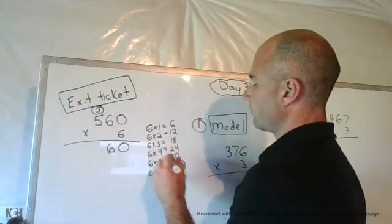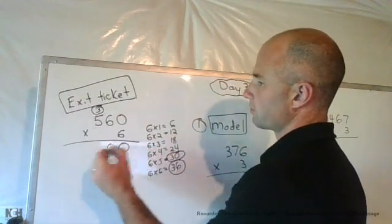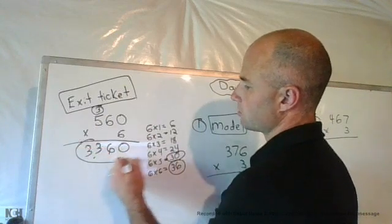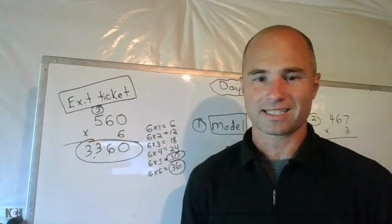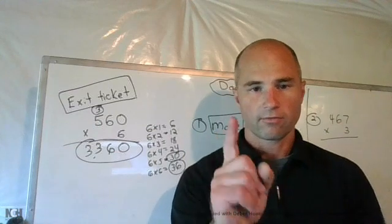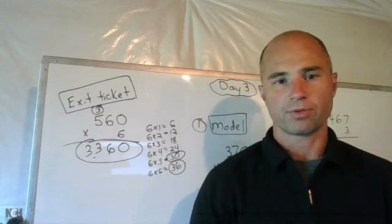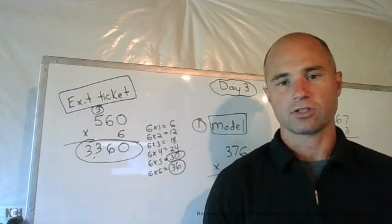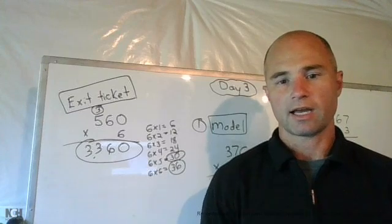Six times five is thirty, plus the three gives you thirty-three, giving me an answer of three thousand three hundred sixty. Be careful of that regrouping. It can catch a lot of students off guard and make a lot of mistakes happen.